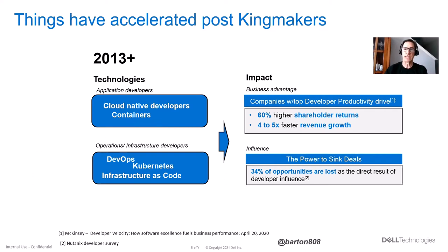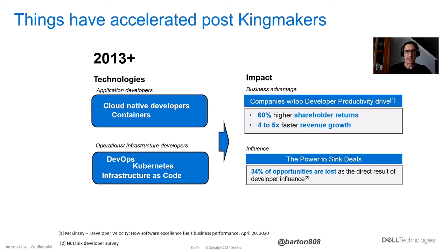Here are some numbers about the impact developers have made. A McKinsey study found that developers in the top quartile delivered to their company 60% higher shareholder returns and four to five times faster revenue growth. And as far as influence goes, a Nutanix survey showed that 35% of opportunities are lost as the direct result of developer influence. So this is someone you definitely want to make sure at least knows who you are, and doesn't keep you from the shortlist.